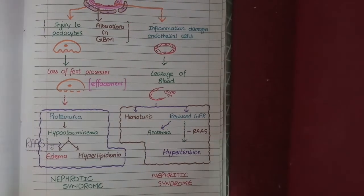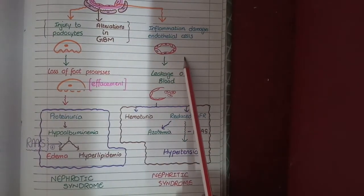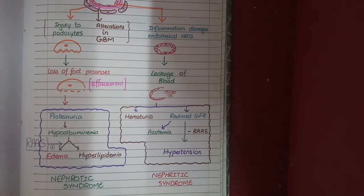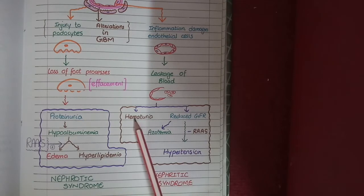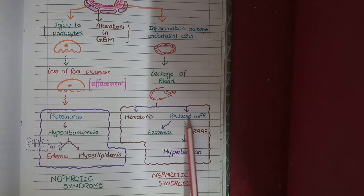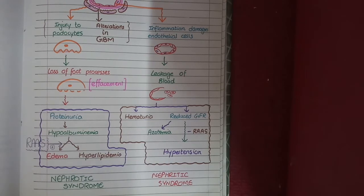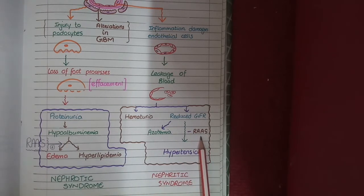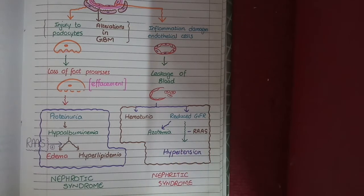Alternatively, if there is injury to endothelial cells — commonly caused by inflammation — the injured glomerular endothelial cells result in leakage of blood, known as hematuria. The injured glomerular capillaries are also unable to filter blood, and this reduction in GFR causes buildup of nitrogenous waste products in the blood, known as azotemia, which is a sign of poor kidney function. Additionally, due to reduced GFR, activation of the renin-angiotensin-aldosterone system occurs, and angiotensin and aldosterone together raise blood pressure, causing hypertension.